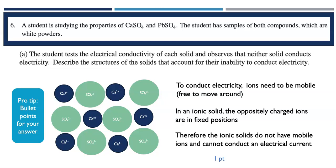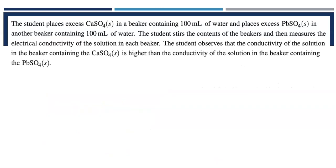The student places excess calcium sulfate, the solid, in a beaker containing 100 milliliters of water and then places excess lead-tooth sulfate, also the solid, in another beaker containing 100 milliliters of water. The student stirs the contents of the beakers and then measures the electrical conductivity of the solution in each beaker. The student observes that the conductivity of the solution in the beaker containing the calcium sulfate is higher than the conductivity of the solution in the beaker containing the lead-tooth sulfate.